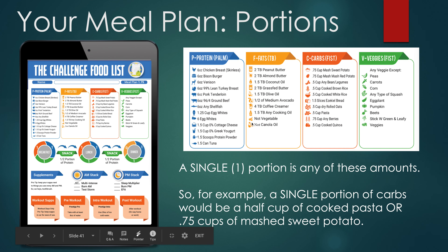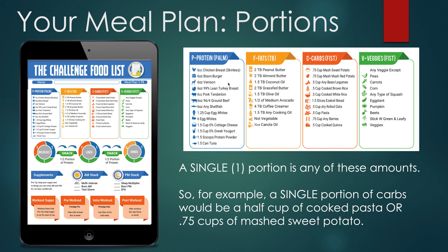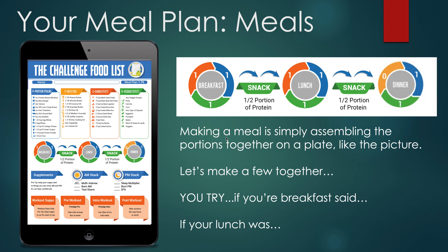To summarize portions: my protein should not be larger than the size of my palm; fats should not exceed the portion sizes listed in the fats column; carbs should not exceed the portions listed in the carbs column; and no matter what, I must get a fist-size portion of veggies at breakfast, lunch, and dinner. Meals for breakfast, lunch, and dinner need to consist of one carbohydrate from the orange column, one protein from the blue column, and one veggie from the green column.